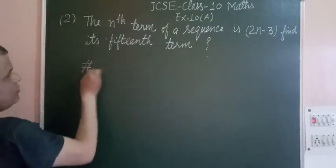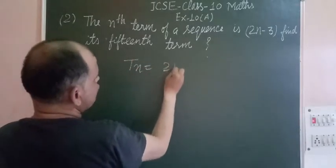Here we have Tn, which is the nth term, 2n minus 3.